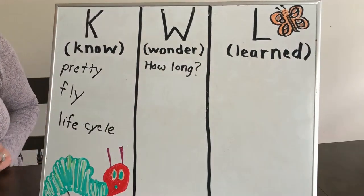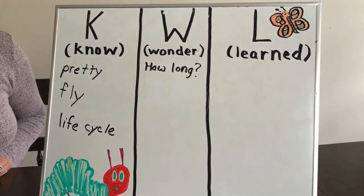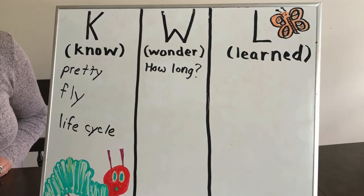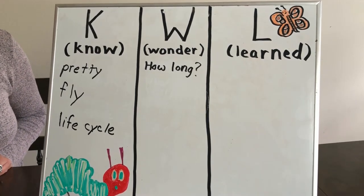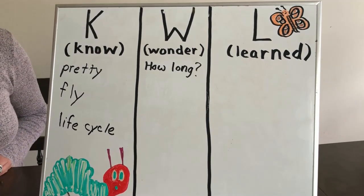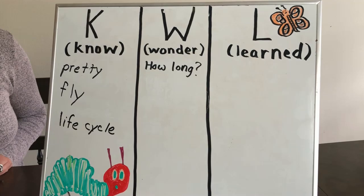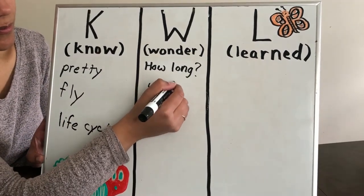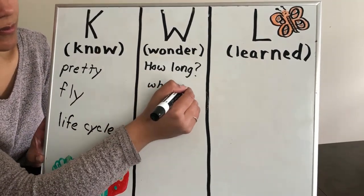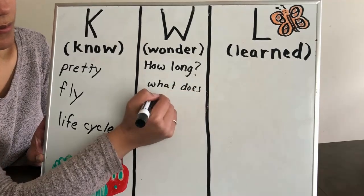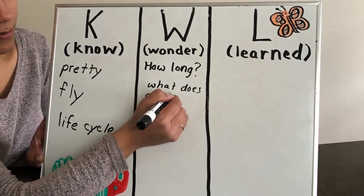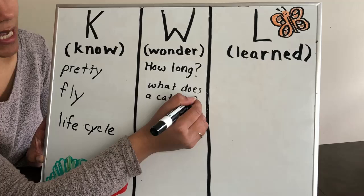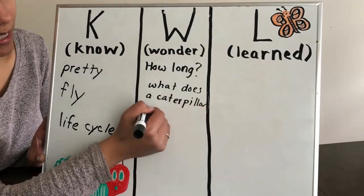Also, I read the book The Very Hungry Caterpillar by Eric Carle. In that book, the caterpillar ate lots of different types of food. But I wonder, what do caterpillars really eat? So I'm going to write: what does a caterpillar eat?